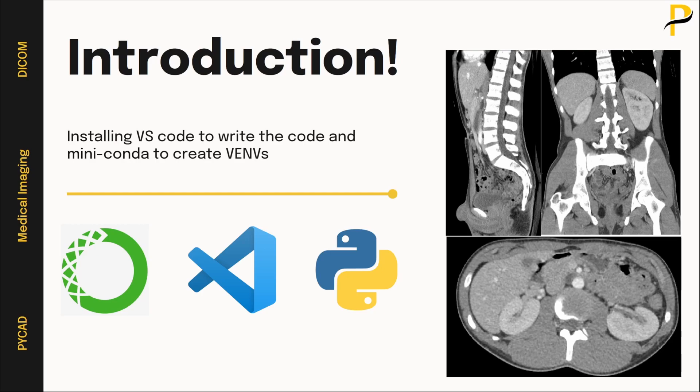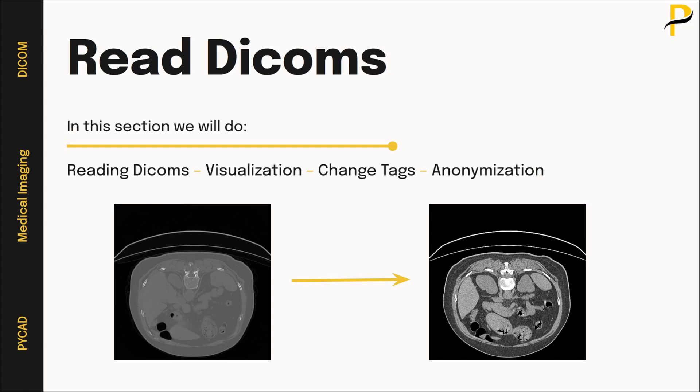For the first section, we will do a small introduction and cover installation for the different packages. The first thing we will install will be VS Code, which will be our text editor used in this course. The second thing will be how to install Miniconda, which is the tool that will help us to create virtual environments.